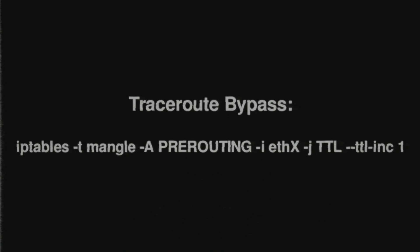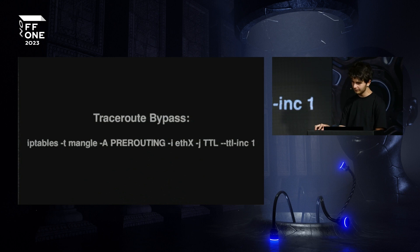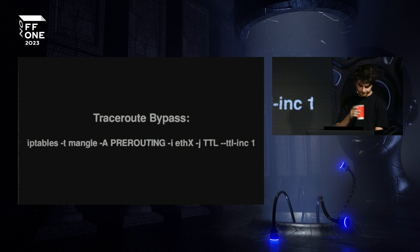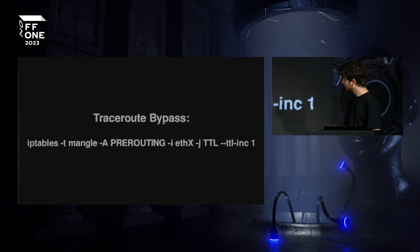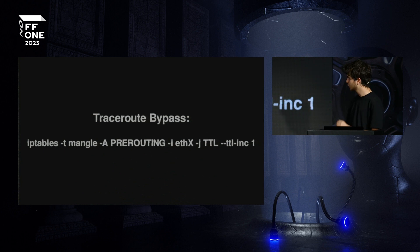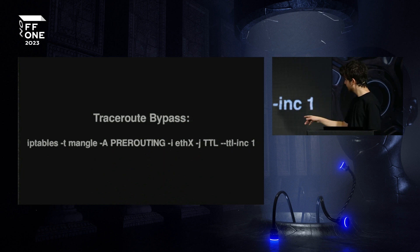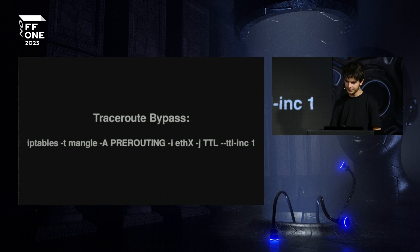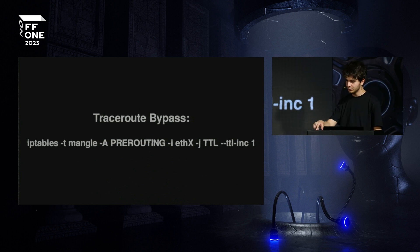Another important step: you have to avoid trace detection. MitM attacks generate an extra hop, so during traceroute, engineers will detect the extra hop and be alerted. Using the mangle table in the pre-routing chain — which decides what happens to a packet before routing — I set the interface and shift the TTL for all packets on my interface with a +1 increment, so my IP address will not be visible at the traceroute level.